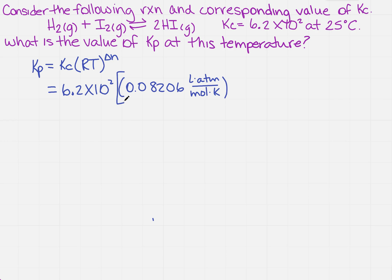I'm going to go ahead and brace these down. And then I'm going to need to multiply it by the temperature. Well, it's 25 degrees, so that's 298.15 in Kelvin. Remember, that's because I added 273.15.